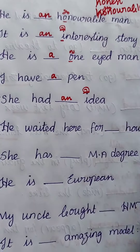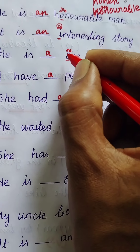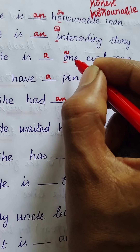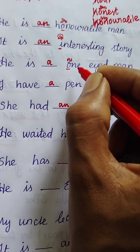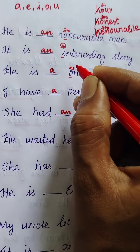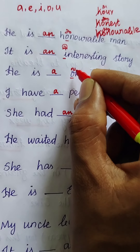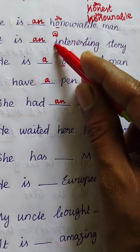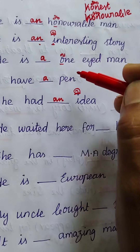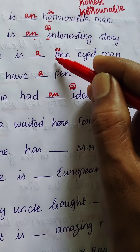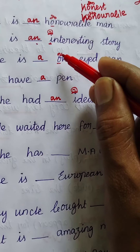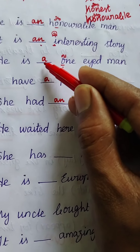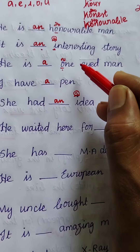For 'one-eyed man', the correct pronunciation is 'wʌn'. We should not pronounce it as a vowel sound. So when a vowel letter has a consonant sound, we use article 'a'. Vowel letter with vowel sound means 'an'. But when a word starts with a vowel letter and the pronunciation is consonant, we use article 'a'. Hence the answer is: He is a one-eyed man.